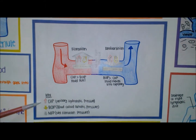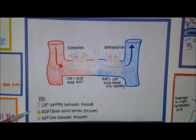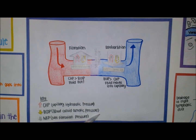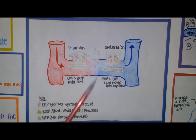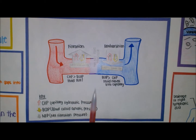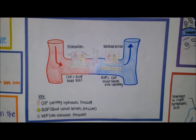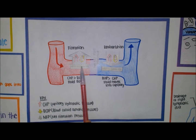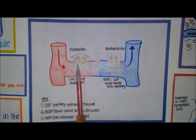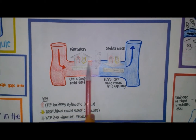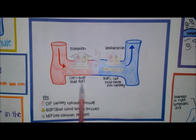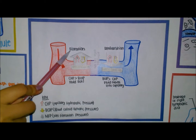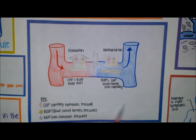Looking at the diagram, the red arrow depicts capillary hydrostatic pressure, the yellow arrow is blood colloid osmotic pressure, and the gray arrow is net filtration pressure. At the arterial end of the capillary, capillary hydrostatic pressure is greater than blood colloid osmotic pressure — 35 mmHg versus 25 mmHg — so fluid moves out, allowing filtration to occur.